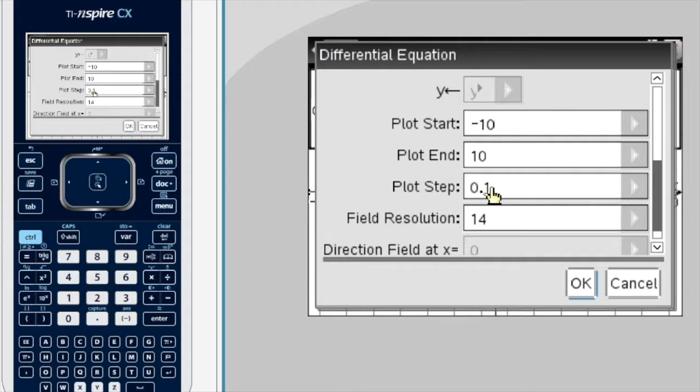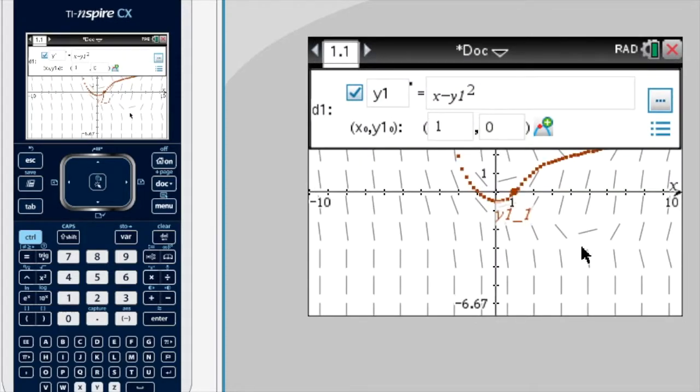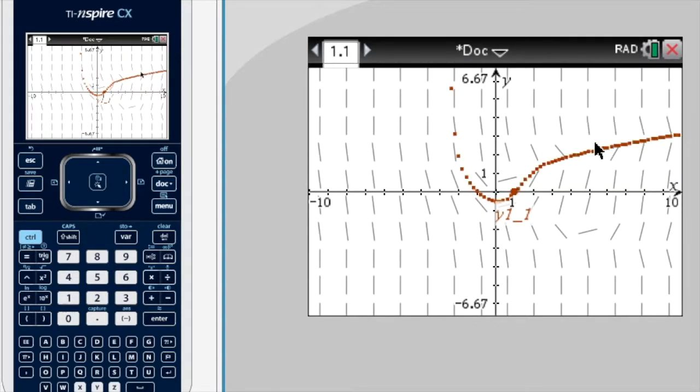I want to use 0.2, so I put in 0.2, press OK, and there it is there. So because it's using slightly bigger steps, you can see it's not as thick a line, the dots aren't as close together.